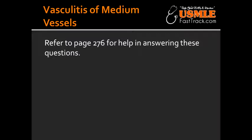What group of vessels are most commonly involved in polyarteritis nodosa? Polyarteritis nodosa typically involves renal and visceral vessels, but it does not have an effect on the pulmonary arteries.